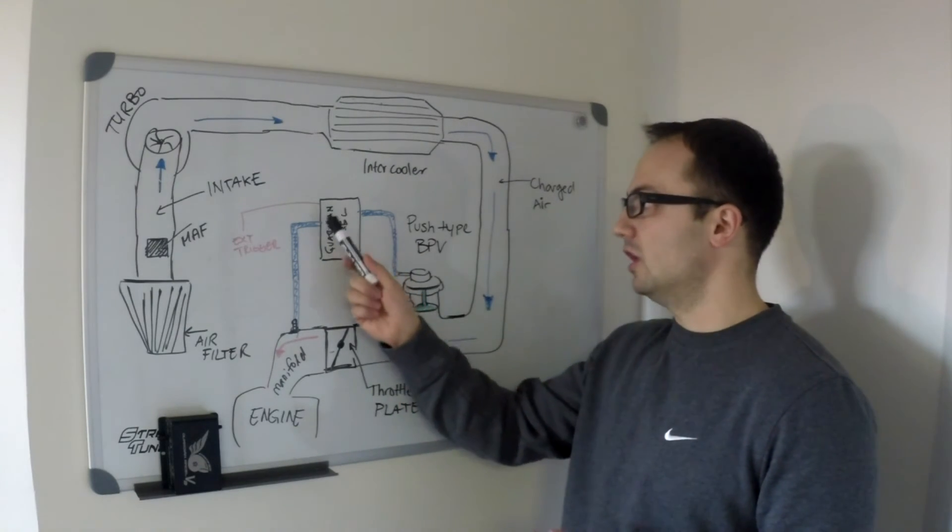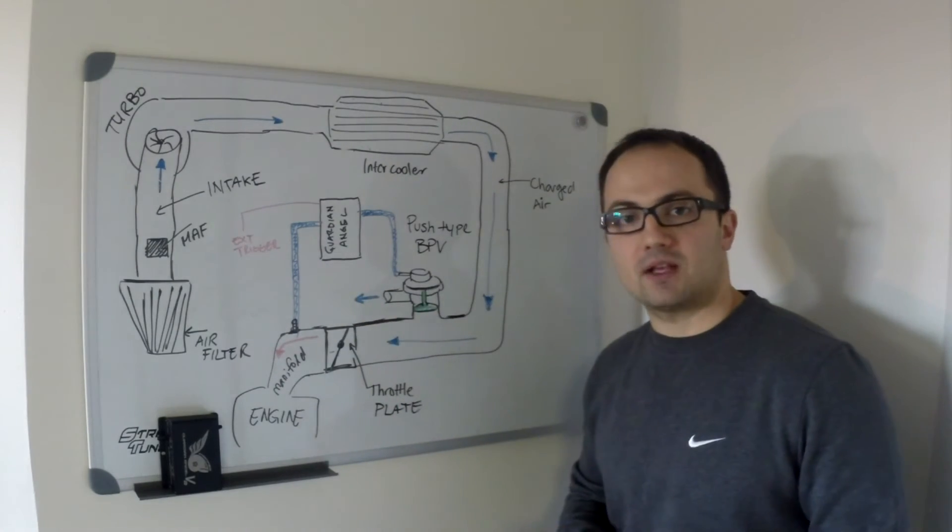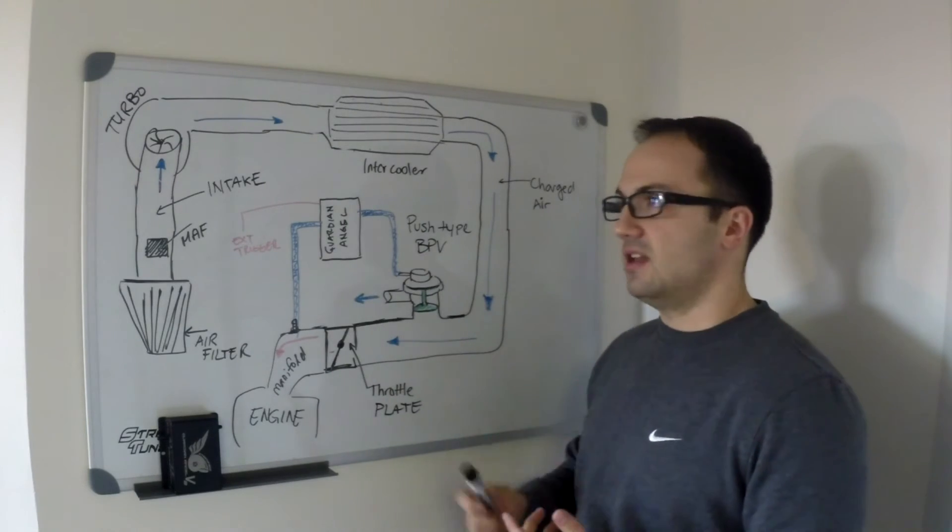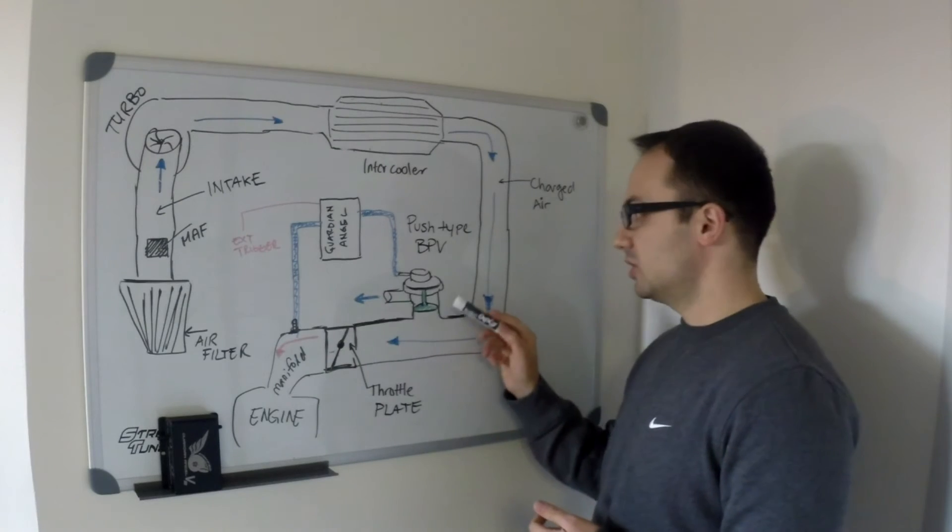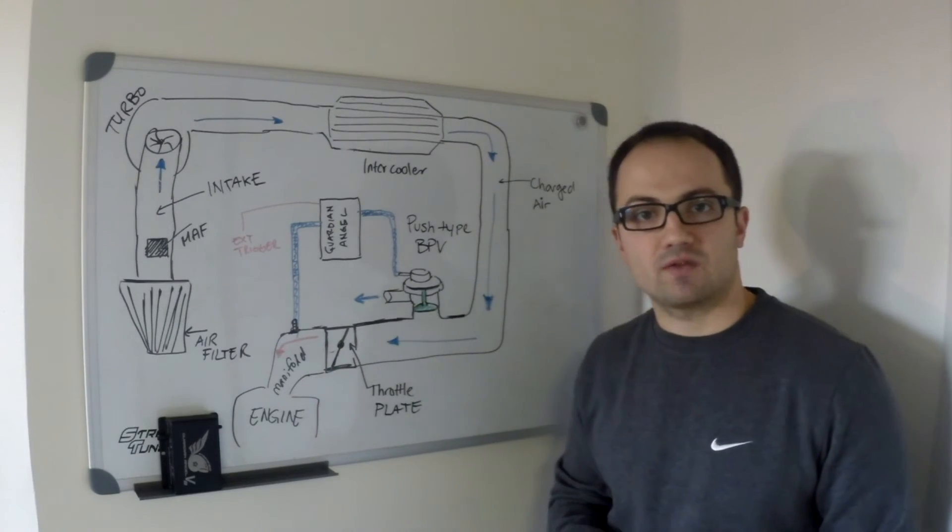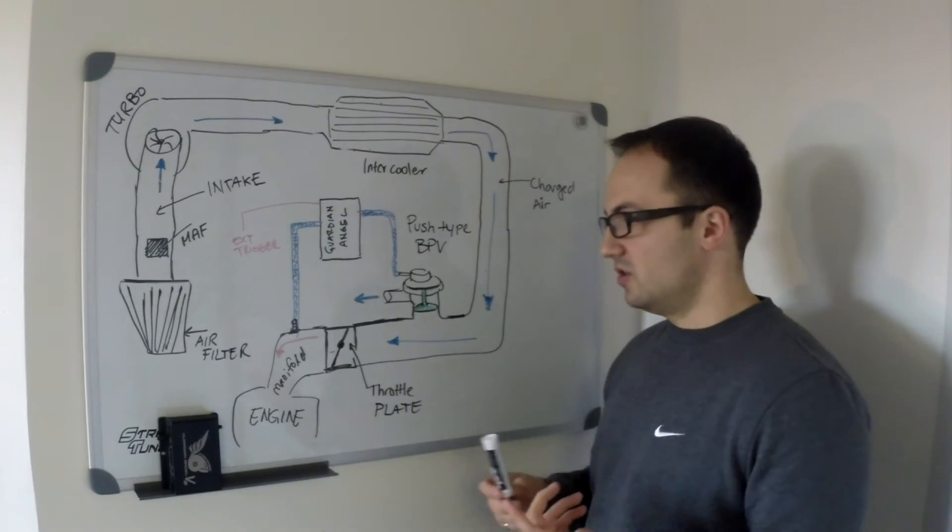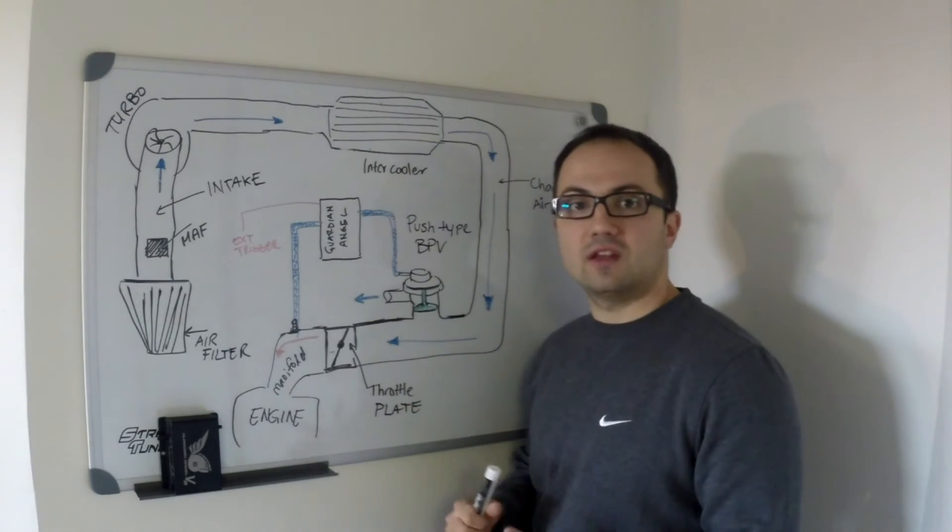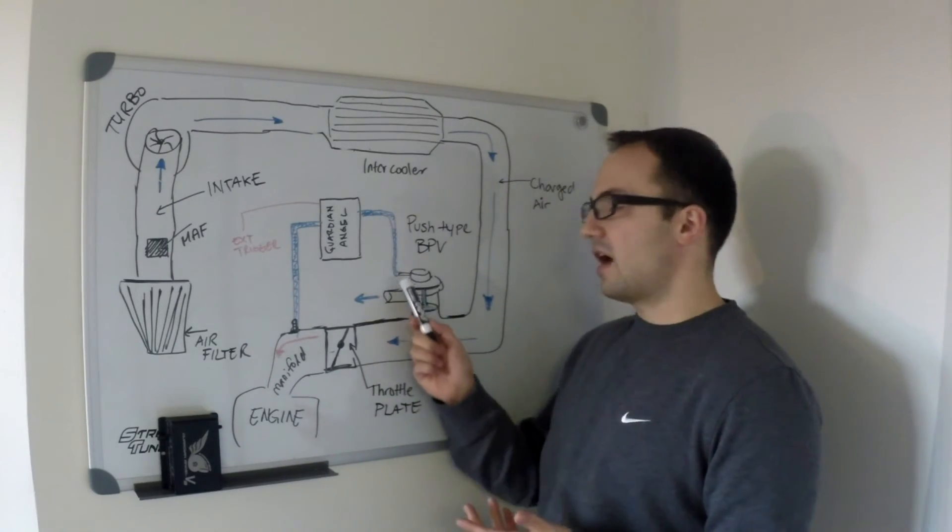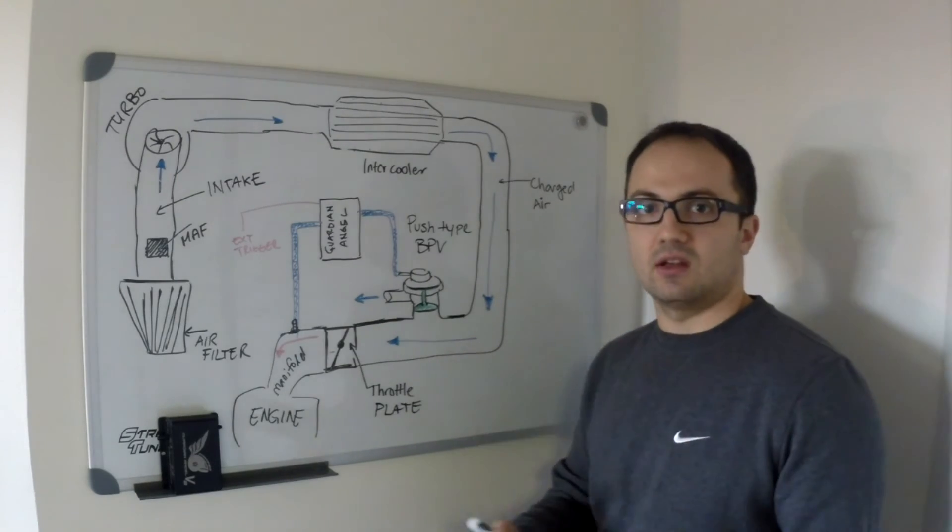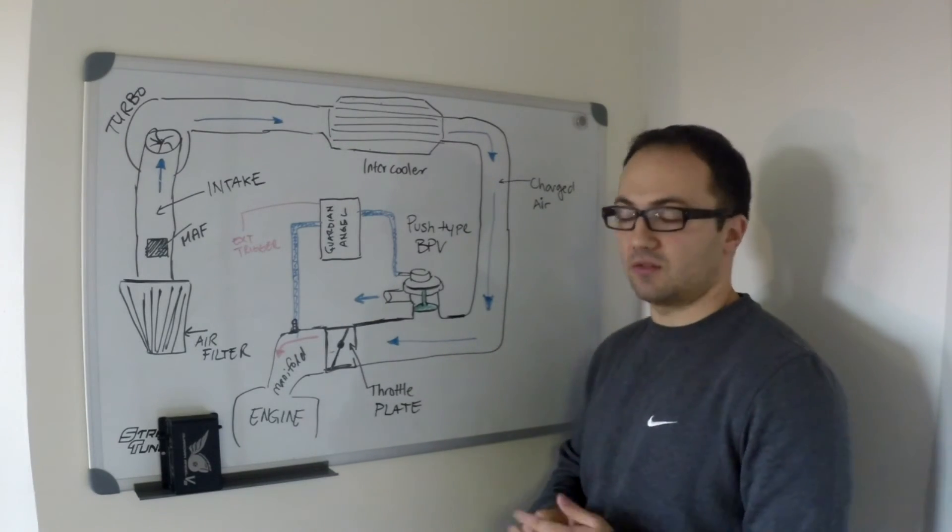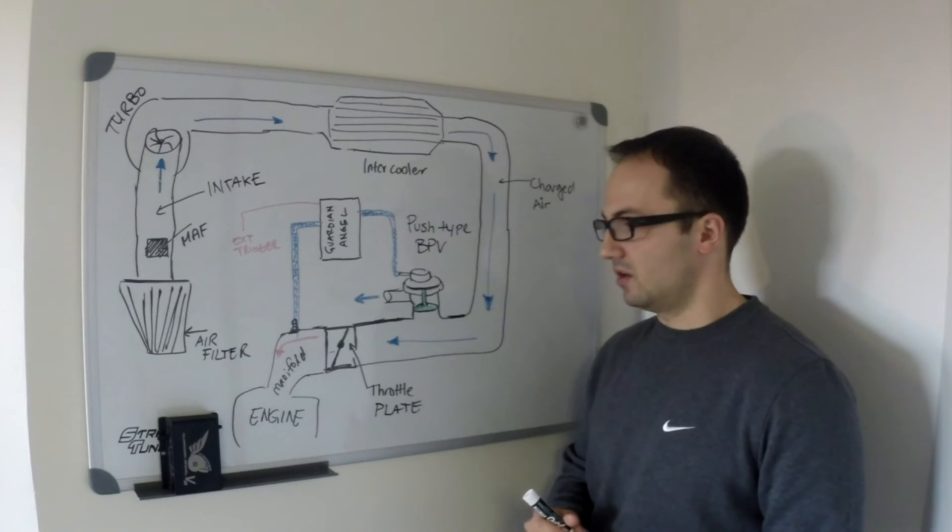The Guardian Angel controls how the bypass valve opens and it not only prevents the rich condition on idle, but it actually speeds up the response to the bypass valve and allows you to safely run your valve vent atmosphere without bogging and without any of the negative aspects of running vent atmosphere bypass valve.